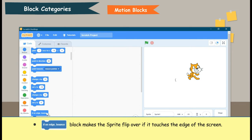If on edge, bounce block makes the sprite flip over if it touches the edge of the screen.